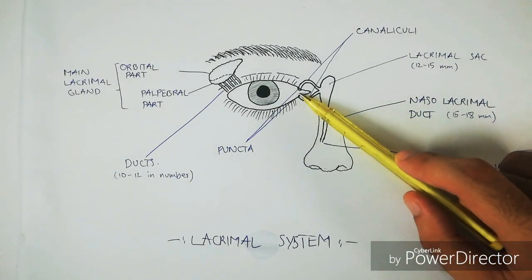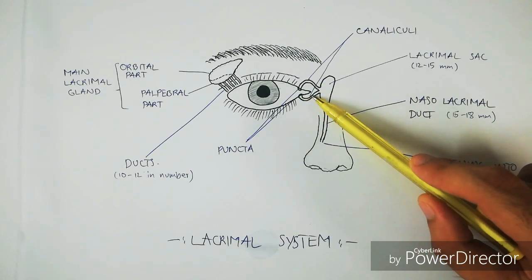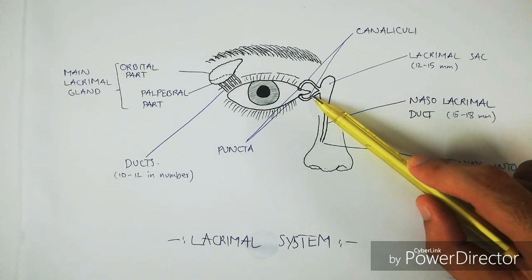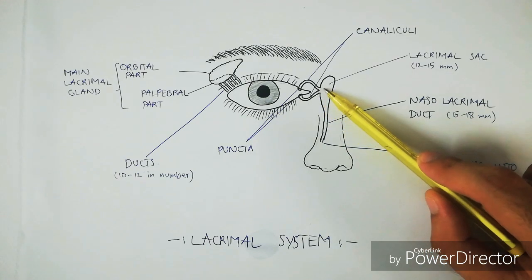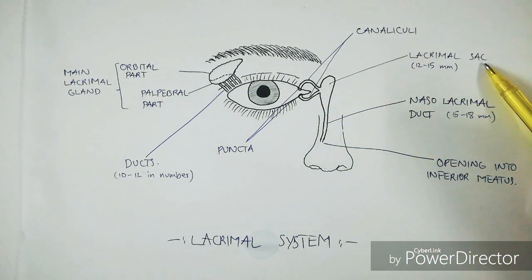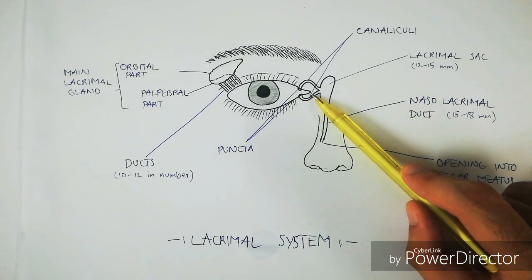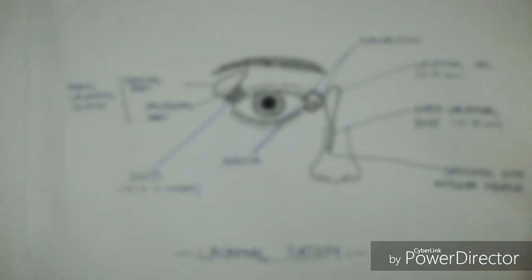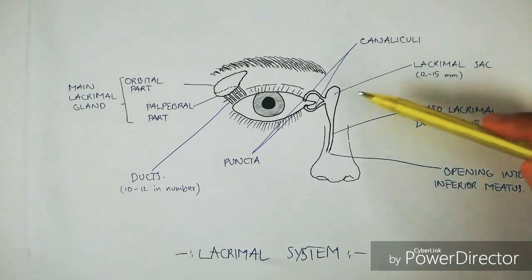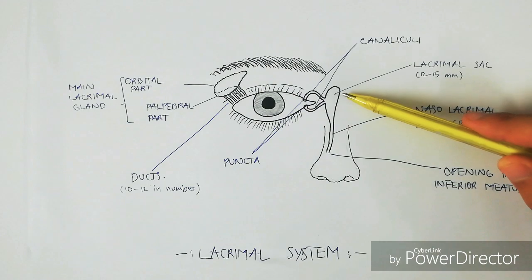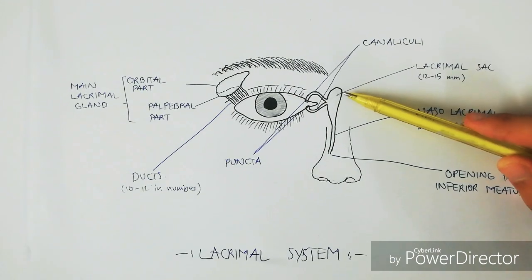The two superior and inferior canaliculi open into the lacrimal sac. The lacrimal canaliculi are about six to seven millimeters to one centimeter, or ten millimeters, in length. The lacrimal sac lies in a bony fossa in the anterior part of the medial orbital wall.